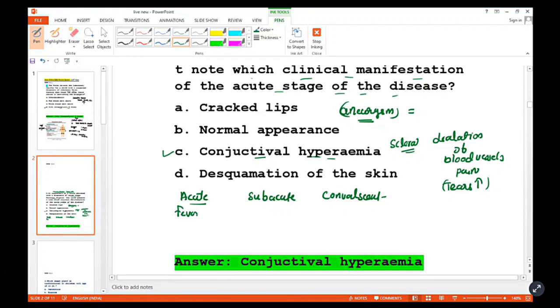Also in the acute stage: fever, red throat, red lips, rashes all over the body, swollen hands, and enlargement of the cervical lymph nodes.